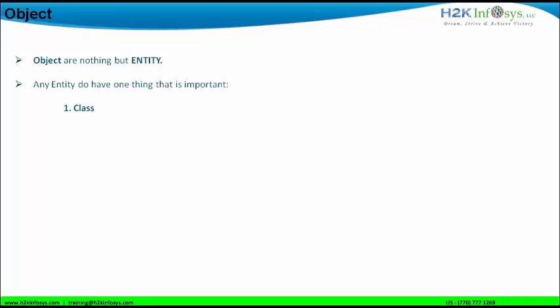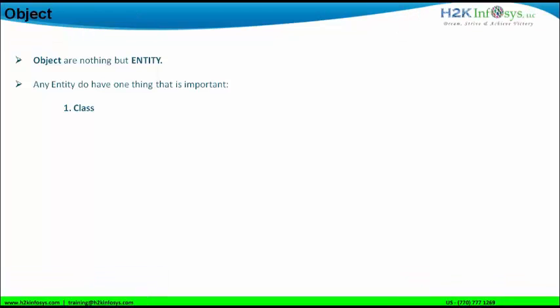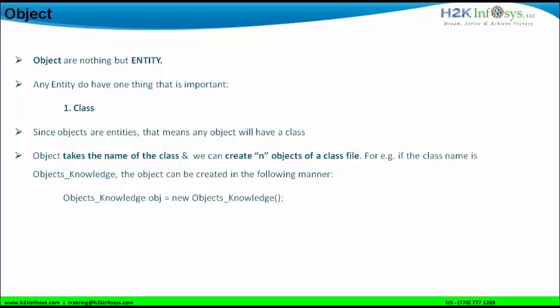It might be possible that two different entities might have different classes, depending on the facts and situations. For example, a dog is an entity or an object; I am also an entity. My class is a human being class, and the dog's class is an animal class. Since objects are entities, any object will have a class. Objects take the name of the class file, and we can create any number of objects in a particular class file. If you have an animal class file, you can create any number of objects for the animal class.